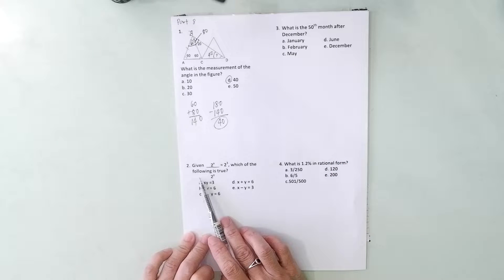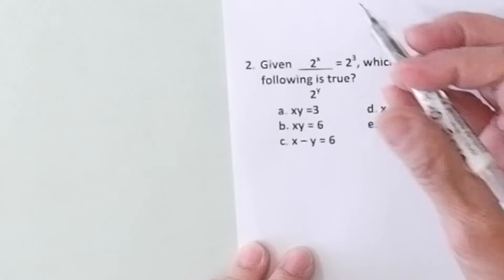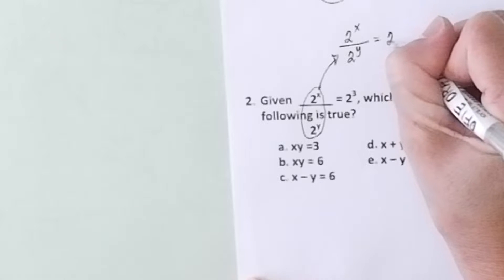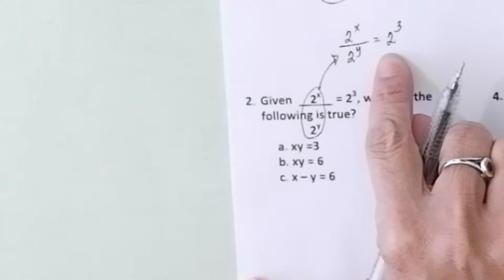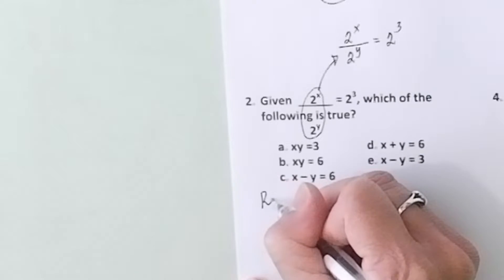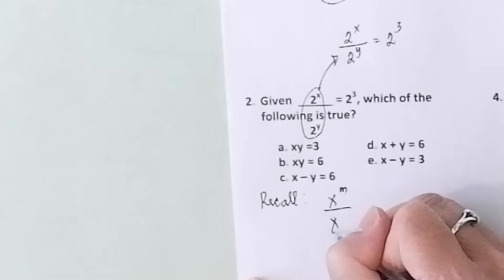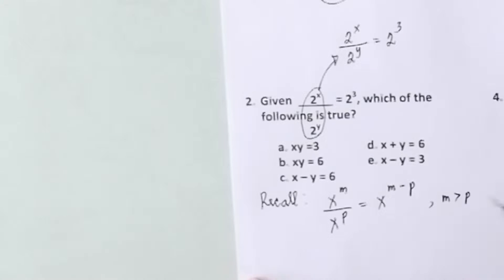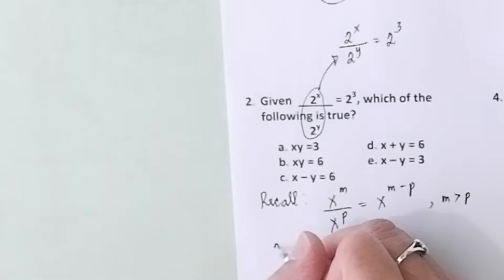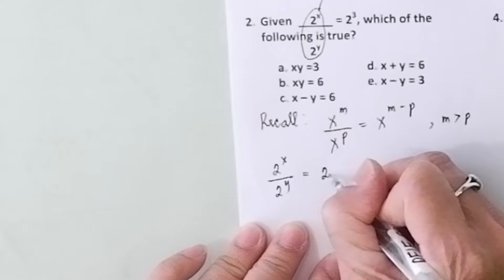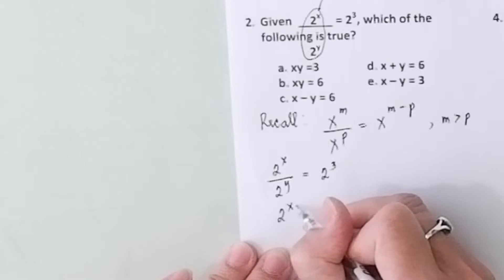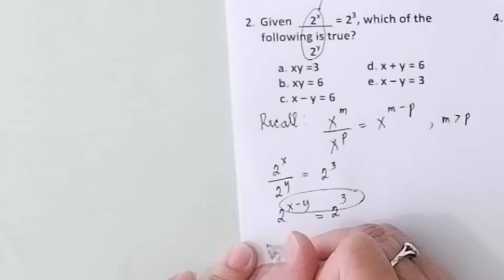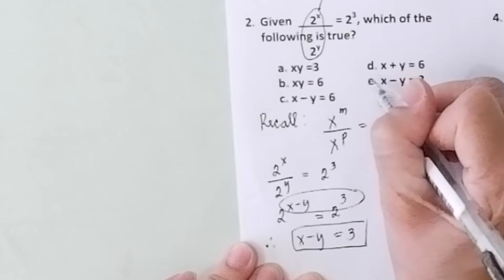Problem number two. Given 2 to the X over 2 to the Y equals 2 to the Q. Which of the following is true? Apply laws of exponents. Recall that X to the M over X to the P equals X to the M minus P, where M is greater than P. So, 2 to the X over 2 to the Y equals 2 to the Q becomes 2 to the X minus Y equals 2 to the third. If the bases are the same, then the exponents are also the same. Therefore, X minus Y equals 3. The correct answer is letter E.